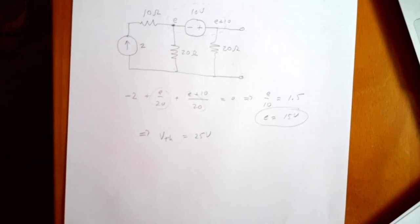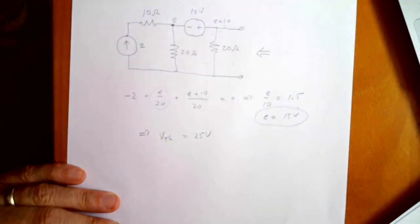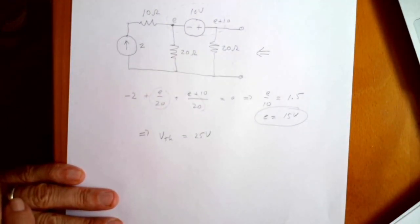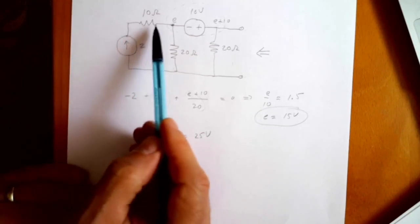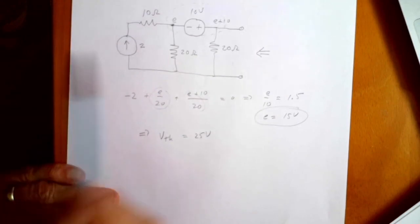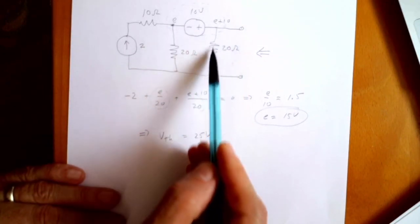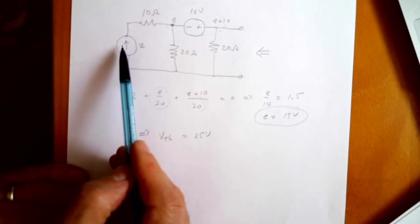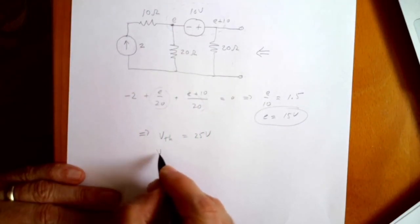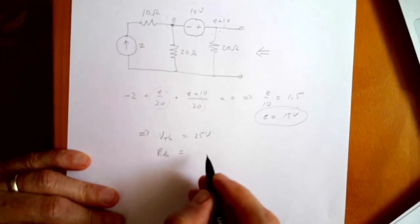To get the Thevenin equivalent resistance, I want to turn all the sources off and just look at what the resistance of the network appears to be from the point of view of someone looking in, with all the sources turned off. This 10 volts I'm going to dial down to zero. This two amps I'm going to dial to zero — that means there's no current in this branch and no voltage drop across this 10 ohms. Basically this looks like two 20-ohm resistors in parallel. This two amps becomes an open circuit. So what I end up with is R Thevenin equal to 10 ohms.